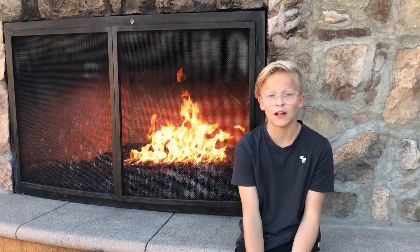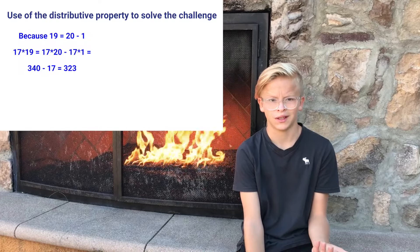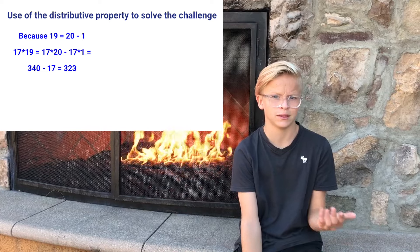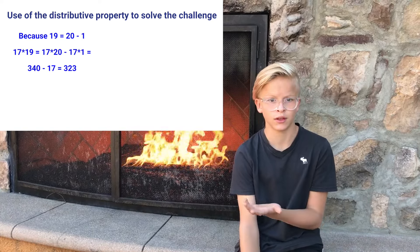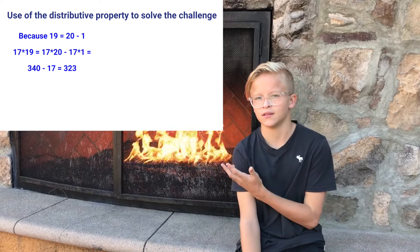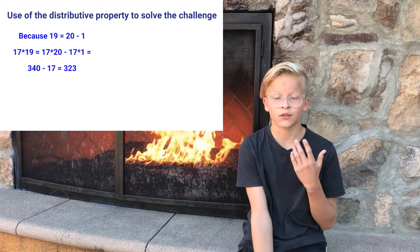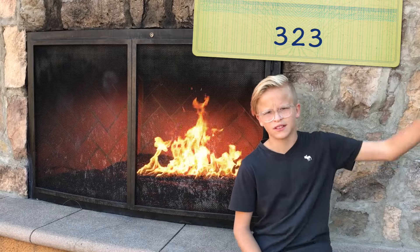Now let's get back to the original problem and I'll explain to you how the distributive property can improve your number sense. First, we evaluate 17 times 19. Since 19 is just 20 minus 1, so 17 times 19 is just 17 times 20 minus 17 times 1. 17 times 20 is 340, minus 17 times 1 which is 17, giving us 323. Let's put 323 to the side.